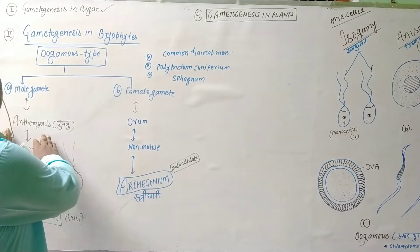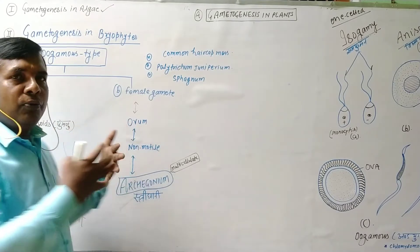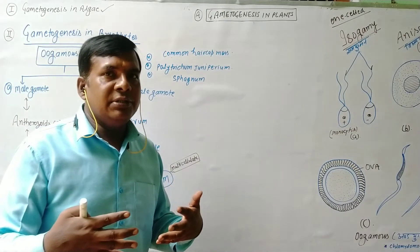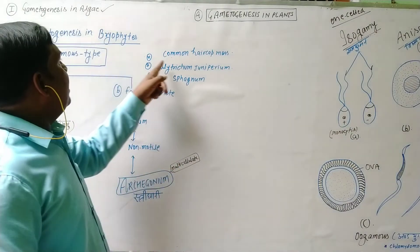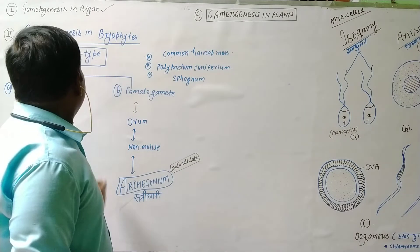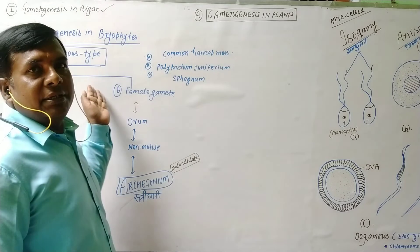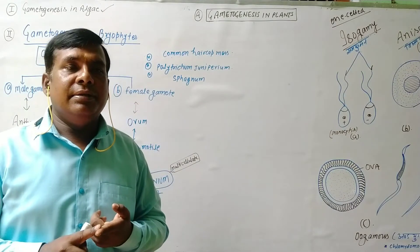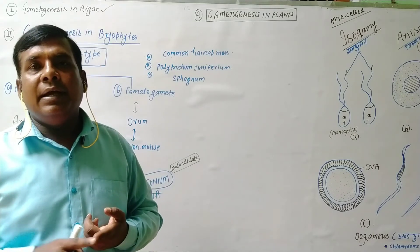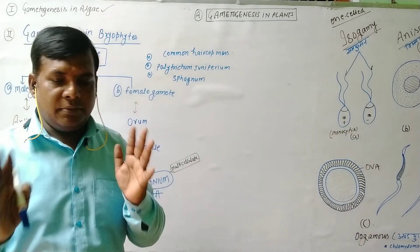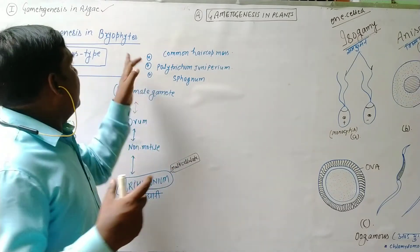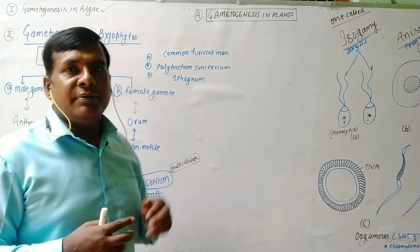Both antheridium and ovum are going to fuse together to form an oospore. And one more thing — alternation of generation is found in the Bryophytes. The second most important thing for the Bryophytes is that the gametophyte phase is the dominant phase of the Bryophytes.